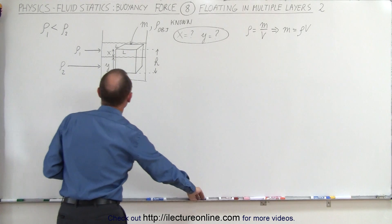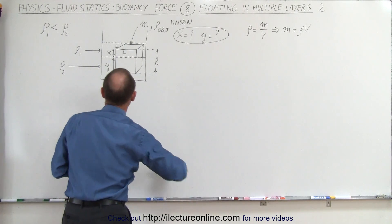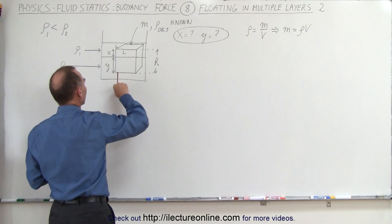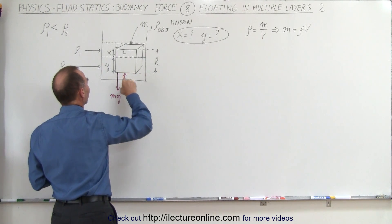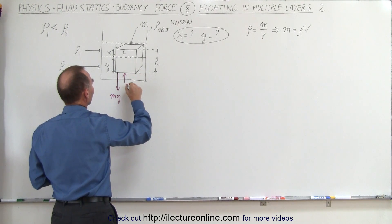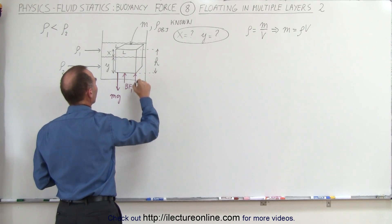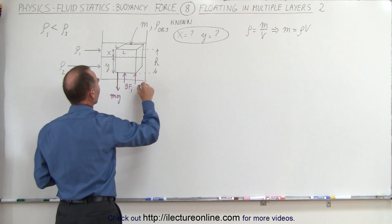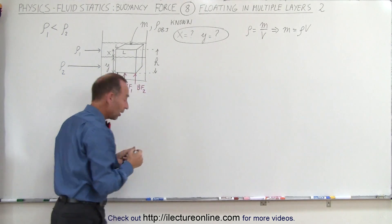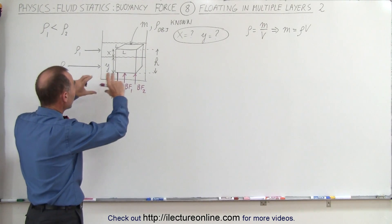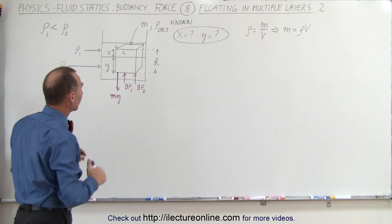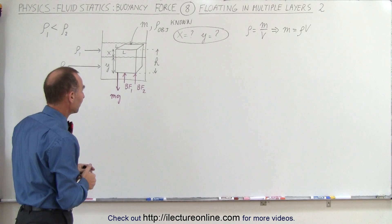We do have the weight of the object pulling down due to gravity, so we have the mg. But we have the buoyancy force offered up by the first layer — we'll call it buoyancy force one — and we have a second buoyancy force, buoyancy force two, caused by the portion of the object being suspended or beneath the surface in the second layer.